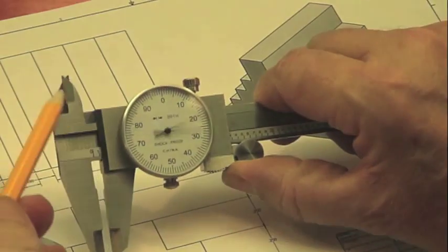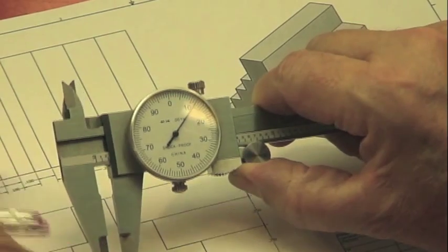The second way to take a reading is using the other jaws to take an inside measurement. This is useful when you need the diameter of a hole.